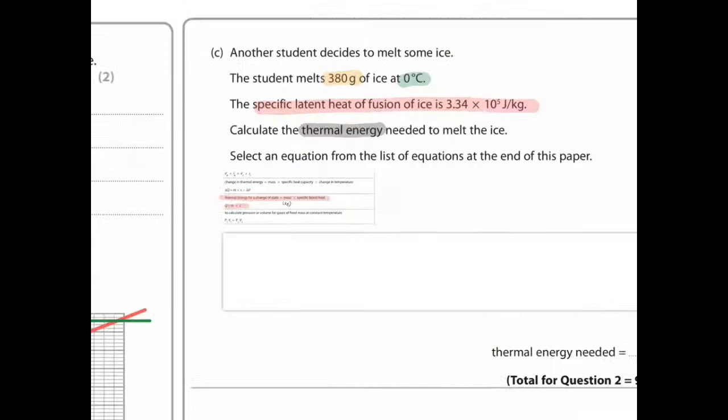A student decides to melt some ice. The student melts 380 grams of ice at 0 degrees Celsius. The specific latent heat of fusion of ice is 3.34 times 10 to the 5 joules per kilogram. That's how much energy is required to change the state of a substance from a solid to a liquid or a liquid to a solid. So calculate the thermal energy needed to melt the ice.